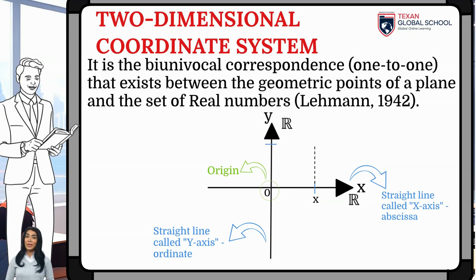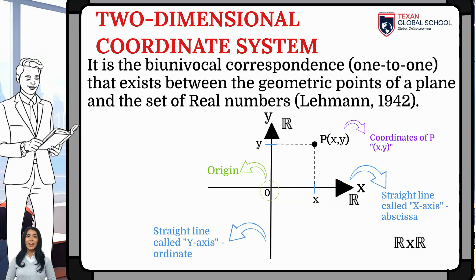Each point in the plane corresponds to one and only one pair of coordinates (x, y). Conversely, any pair of coordinates determines one and only one point on the plane. Given a point P with coordinates (x, y), the distances from the abscissa axis to point P and from the ordinate axis to point P are perpendicular.